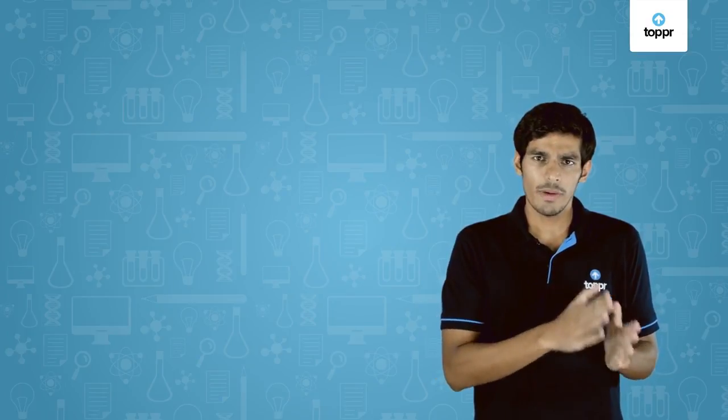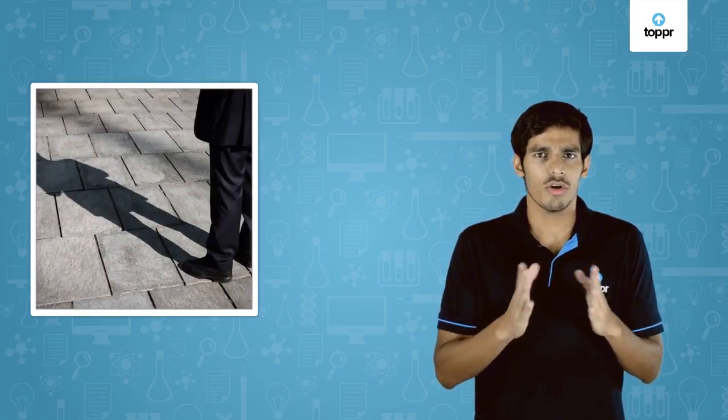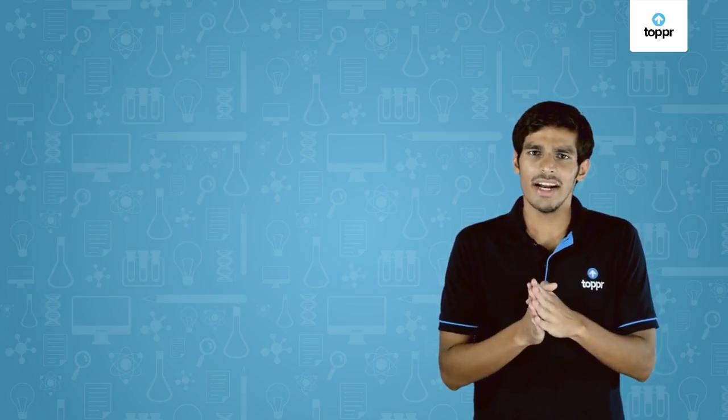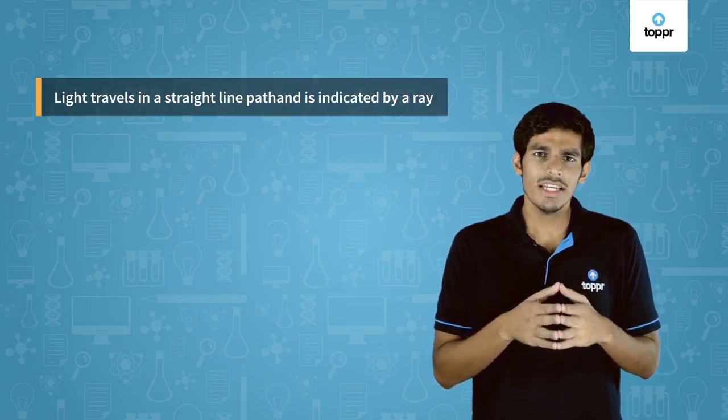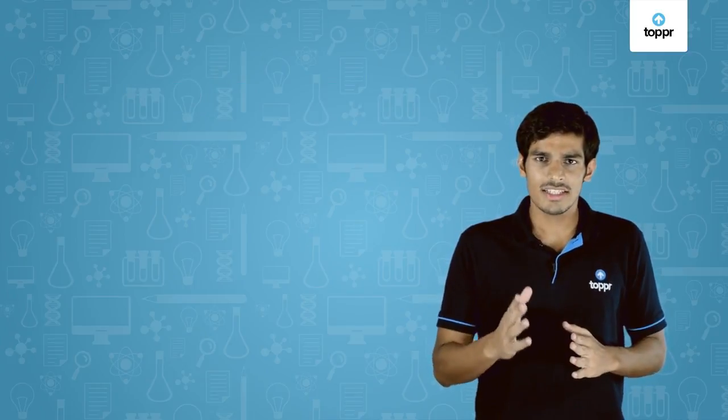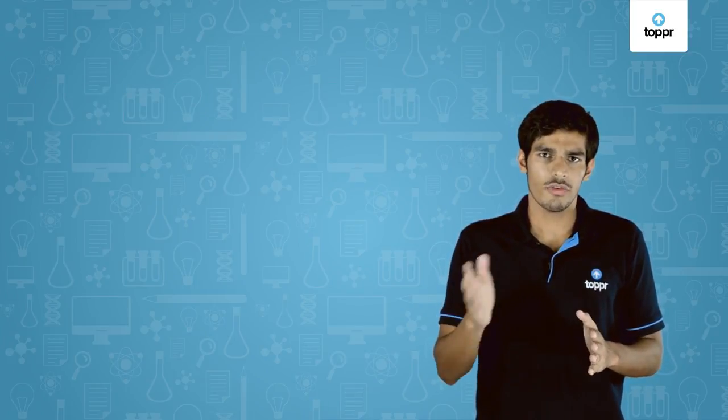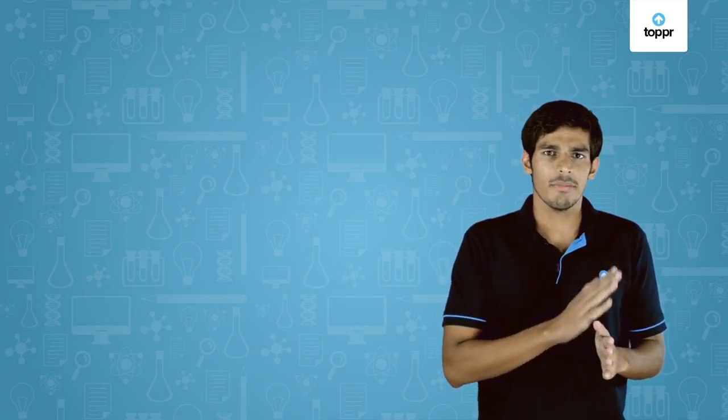We generally see when an opaque object comes in the path of light, light casts a sharp shadow of the object. We can also see the path of light when light enters a dusty room through a window. From these observations, we can say that light travels in a straight line path. In this lesson, we'll study the phenomena of reflection of light which uses the property that light travels in a straight line path.